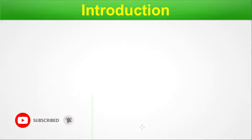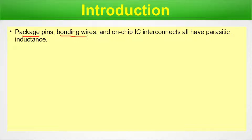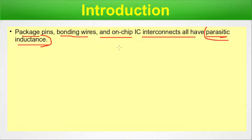Package pins, bonding wires, and on-chip IC interconnects all have parasitic inductance. Just as we have parasitic R and C extracted during PEF or DSPF extraction, we can also extract inductance. That inductance exists within the VLSI chain and causes ground bounce.